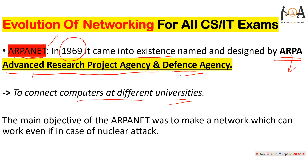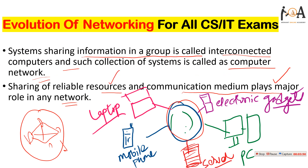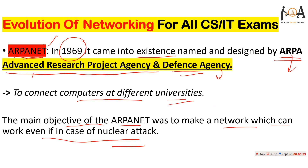The defense agency also came into the picture, and the combined goal of ARPANET and the defense agency was to make a network that could work even in the case of a nuclear attack. The network system should be so strong and reliable, with reliable resources and a robust communication medium, that it could survive a nuclear attack. This was the starting and evolution point of networking — the first stepping stone toward advancement in networking.